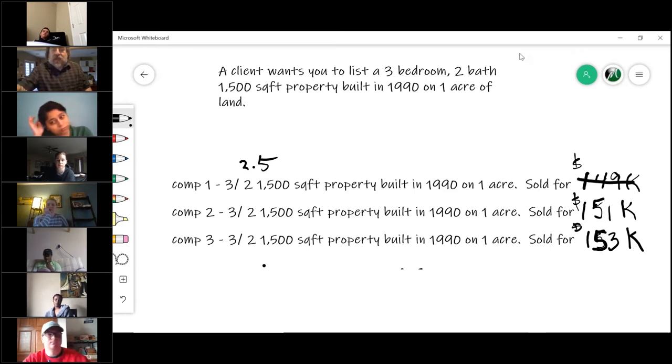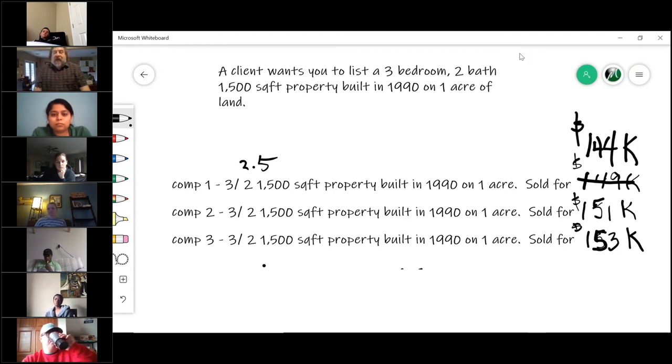And the second one, I don't know, this is not going to work really well. Maybe it's on two acres. Once again, I gotta lower that value. And how much is an acre of land worth? Oh, let's say $2,000. Well, that one now becomes $149,000.